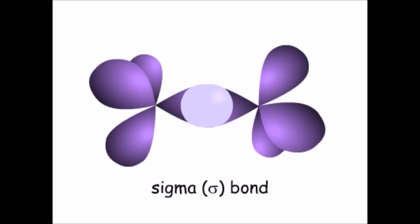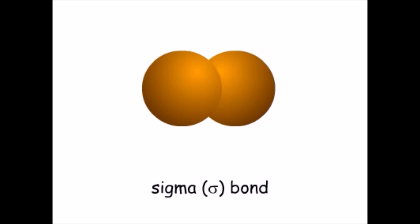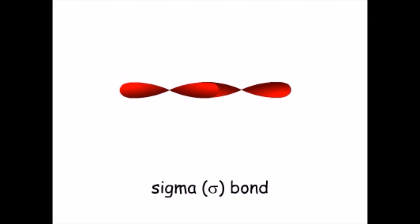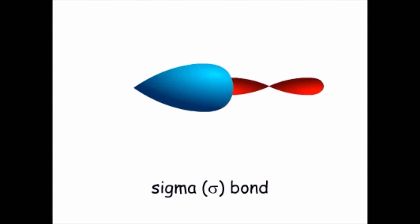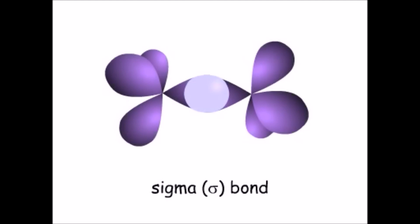Sigma bonds are formed by overlap of electrons from S, P, or any hybrid orbitals. The electron density for a sigma bond is highest along the bond axis. If we look at this bond down its axis, it looks like a sphere.